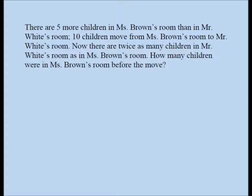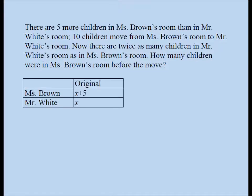We will solve this problem algebraically. In order to solve the problem algebraically, we have to define the variables, and it's something we need to do very carefully. The very first line says there are five more children in Ms. Brown's room than in Mr. White's room. So if Mr. White's room had X children, Ms. Brown's room must have had X plus five children originally.